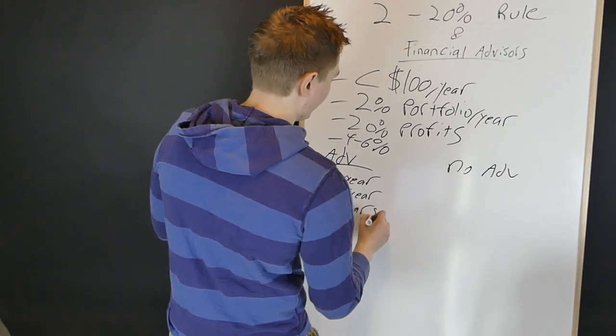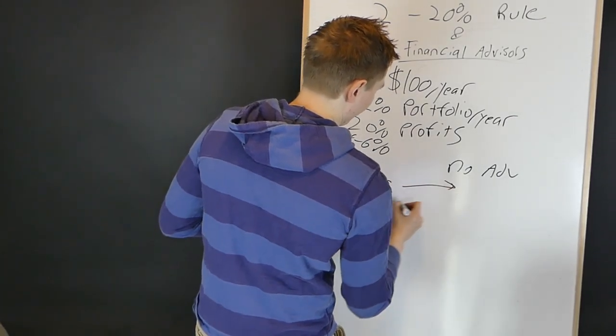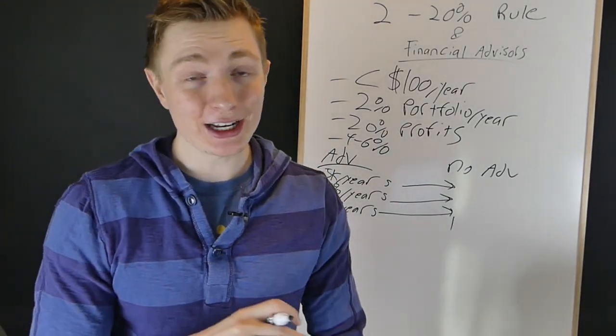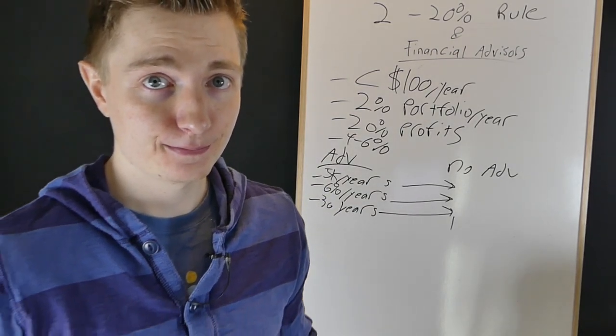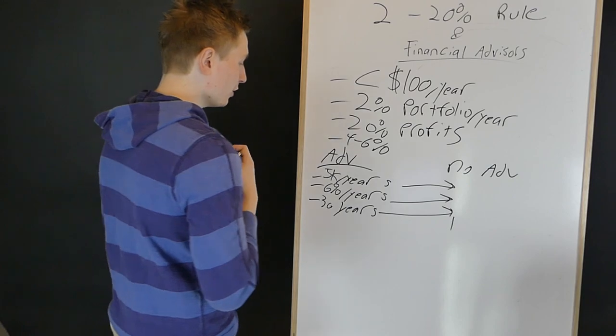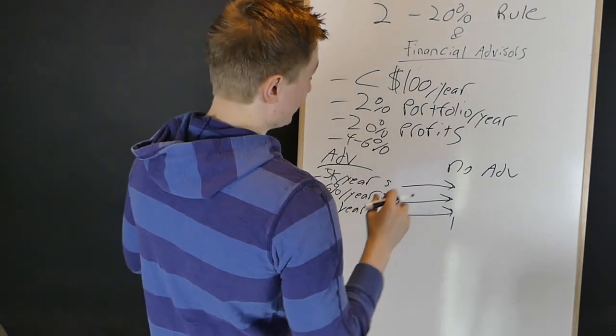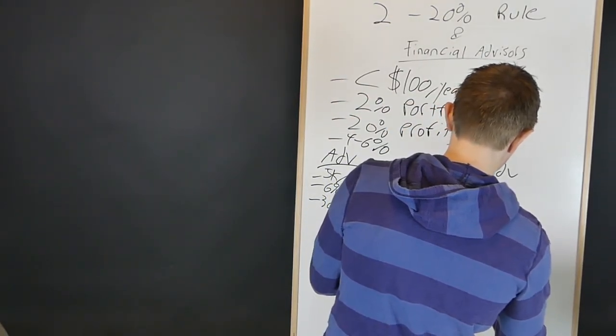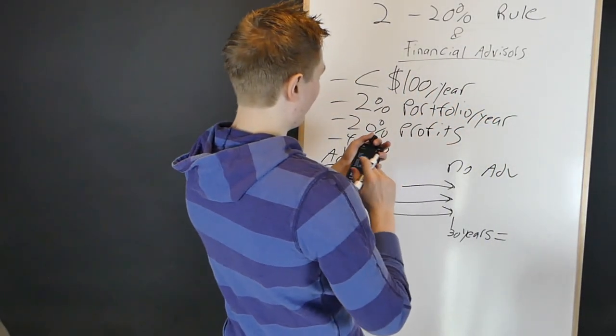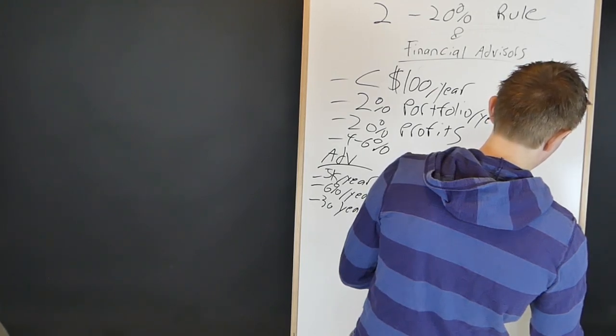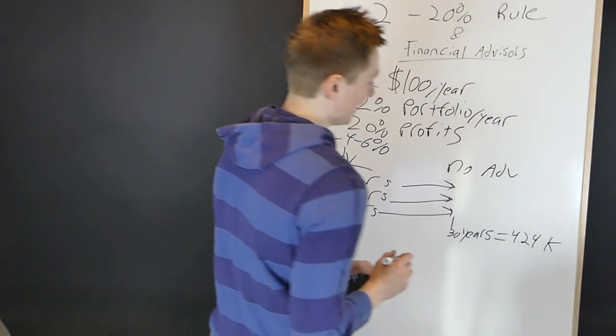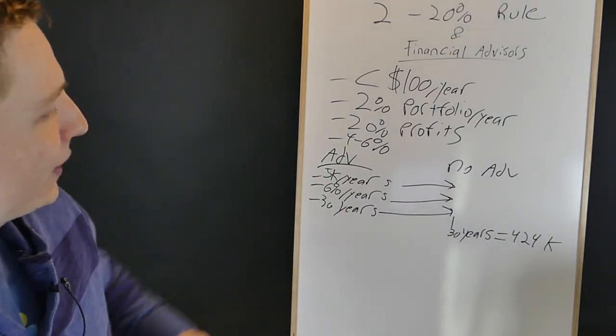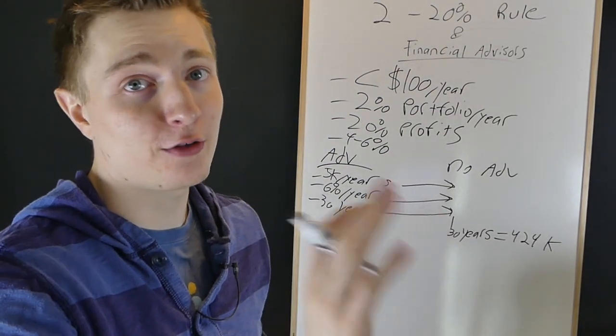So the amount of money you put in is the exact same and you're just getting an average return on your investment in the stock market. That's all that's happening. So with no financial advisor here, after 30 years, you will end up with roughly $424,000 in that account. That's a good retirement account. It's not the best, but it's okay. It's enough to retire. So you have $424,000 after 30 years, you put away $5,000 a year and invested normally.